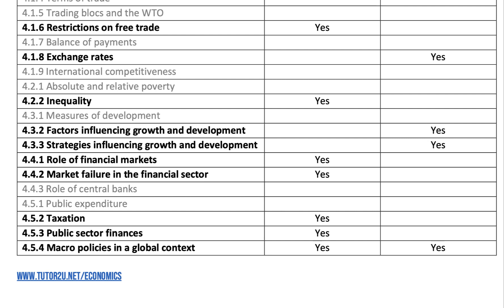They've included a little bit of financial markets — they haven't included central banks, but they've included the roles of financial markets and market failure in the financial sector. So essentially they're covering market failure in externalities, a little bit of market failure in the labour market, and market failure in the financial sector — make sure you've covered all of that. Public expenditure is out, so things like crowding out. Taxation, public sector finances, and government debt and borrowing are in for paper two.